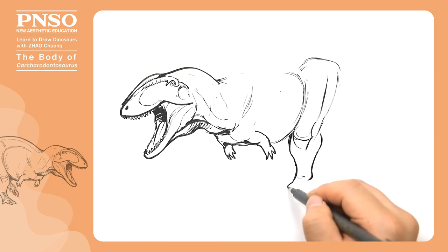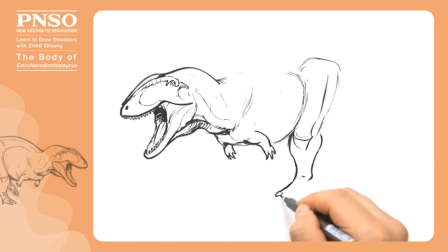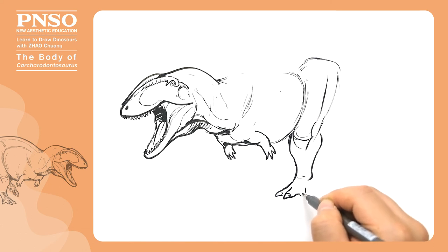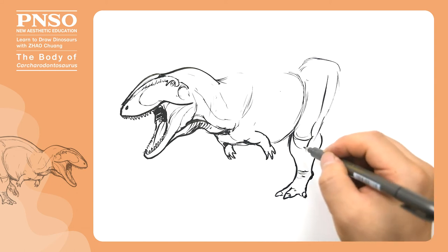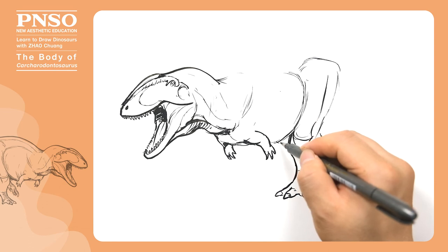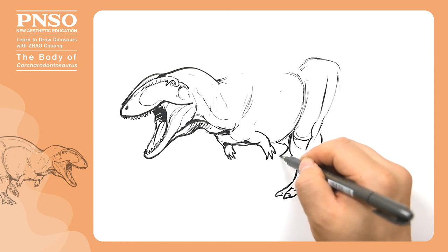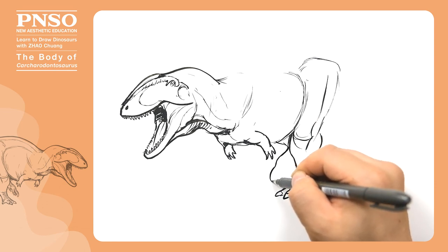Ankle and foot. The legs of Carcharodontosaurus looked shorter compared to its trunk. We draw its foot and the four toes on the other leg.